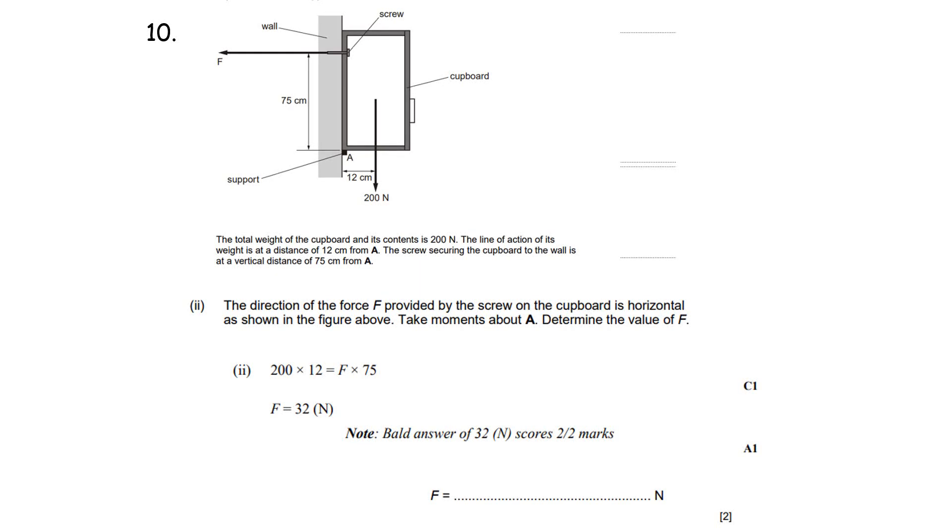And so we can apply the principle of moments and we can say that the clockwise moment is 200 newtons, that's the weight here, multiplied by the distance which is 12 centimeters. It's acting around this point here so that is a clockwise moment, it's turning clockwise about the pivot point A. This is equal to the anti-clockwise moment which is F multiplied by the perpendicular distance to the pivot which is that distance there which is 75. And then if we just solve this for F we get 200 times 12 over 75, and that's equal to 32 newtons. So the answer is F equals 32 newtons.